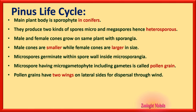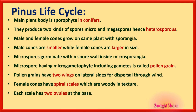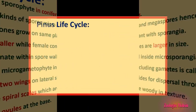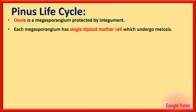Pollen grains of gymnosperms have two wings on lateral sides for dispersal or flight through the wind to reach distant trees. Female cones have spiral scales which are woody in texture; because of the large size, each scale has two ovules at the base — that is another important fact. Every scale in the megasporophyll or female cone has two ovules at the base.